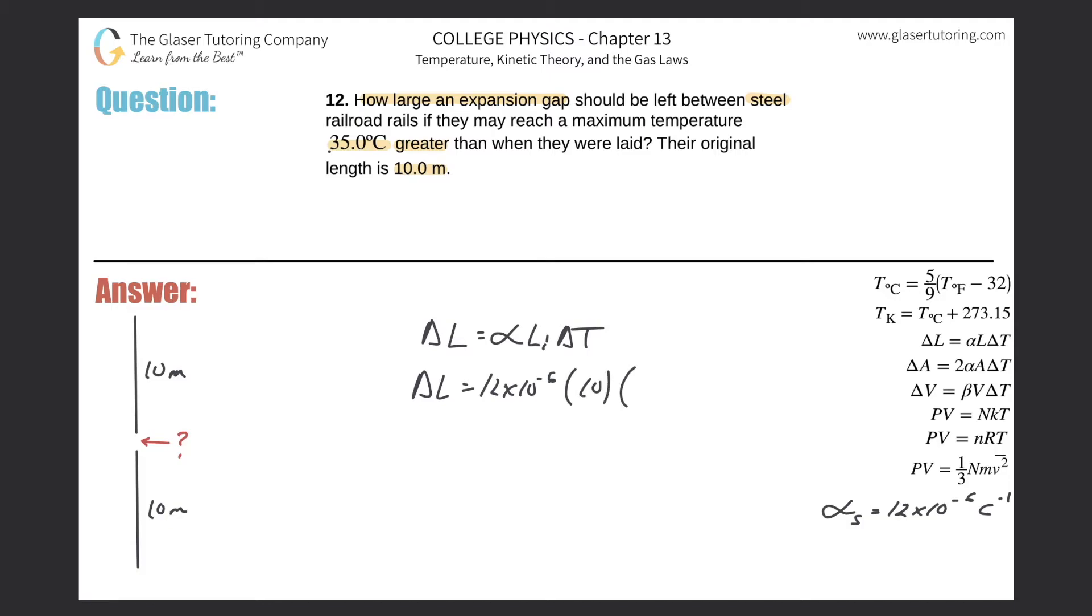times the change in temperature. So it said that the maximum temperature will be 35 degrees Celsius greater. So that sounds like a change in temperature to me. So we plug that in and now we have the change in length will be equal to 12 times 10 to the minus six times 10 times 35.